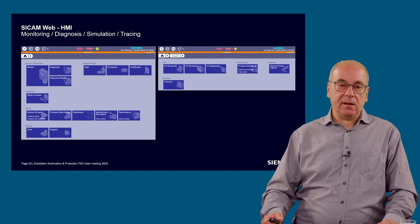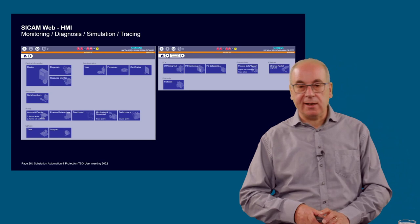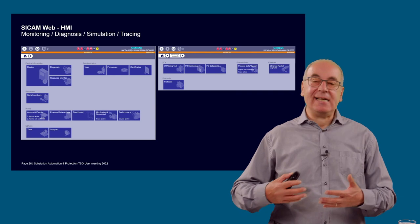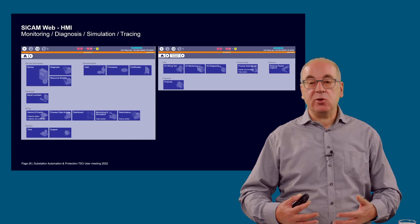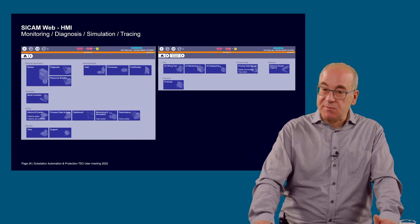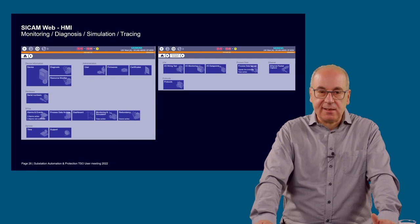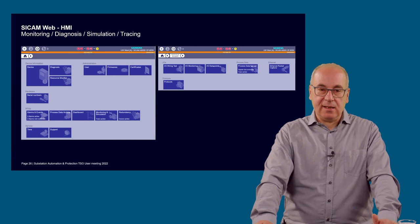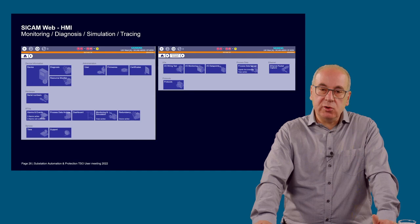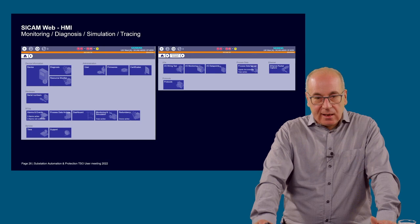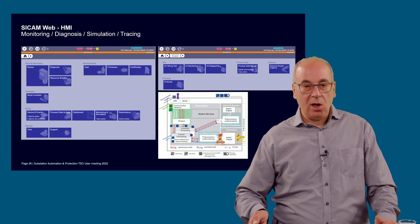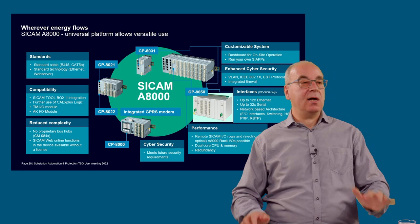The SICAM Web HMI can not only be used for the single-line diagram, but also provides support during engineering and testing. You can do wire tests, simulate the entire data flow disconnected from the process, make your tests, and even start a Wireshark trace to trace signals in case you have behavior you cannot explain. All that is possible with this simple server-based application where you can access the A8000 RTU and perform a lot of tests during parameterization and commissioning — monitoring each signal and tracing each communication protocol. That is more or less the end of my presentation — I am open for questions.